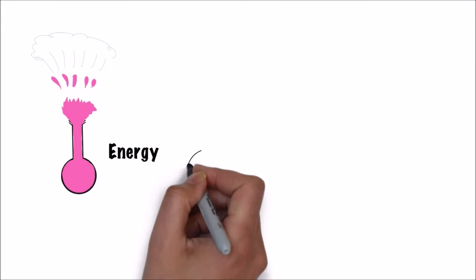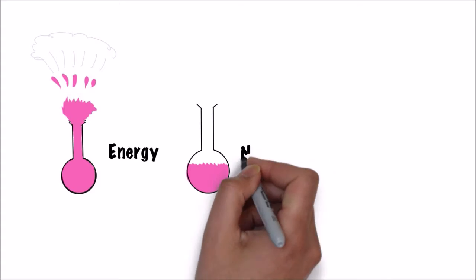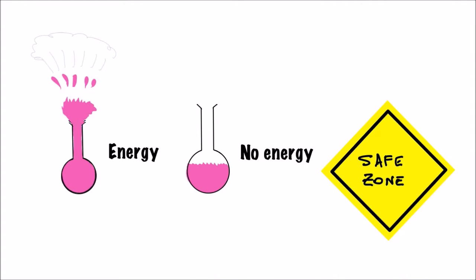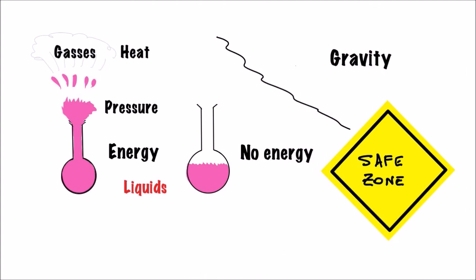And then also look at the energy. Because if there is no energy, there is no danger. So look at whether there is some pressure, heat, are there some gases, are there some liquids or fluids? Is there some gravity that could be stored somewhere in the system? And then isolate, lock out, and exhaust that energy.